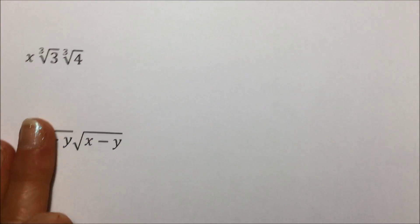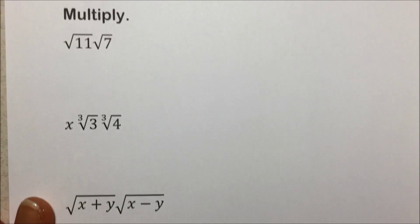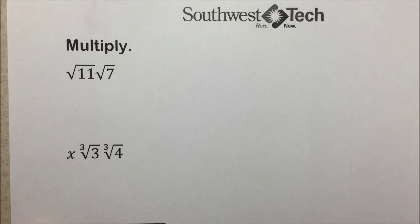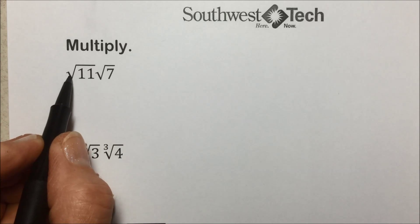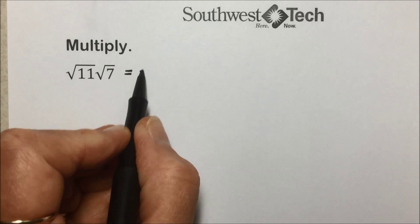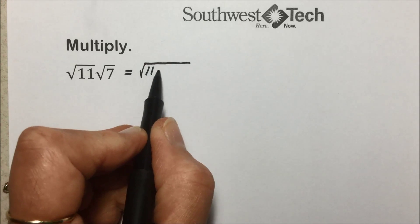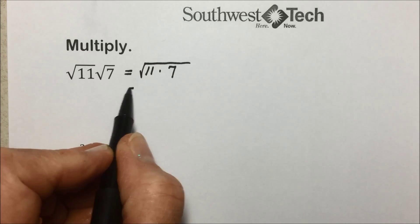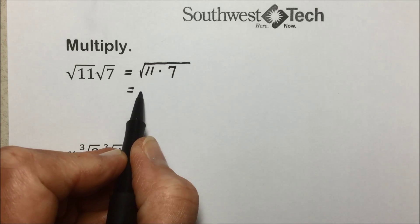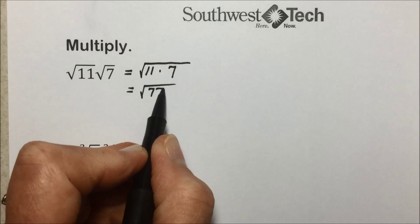We can use that to simplify problems that look like the following. Because these are both square roots with an index of 2, we can multiply the radicands together underneath one radical sign and simplify from there. 7 times 11 is 77.